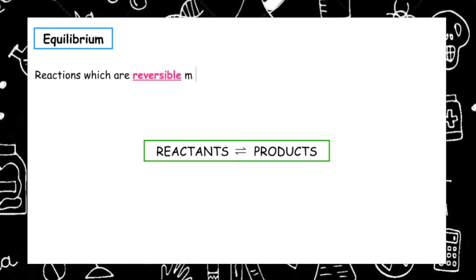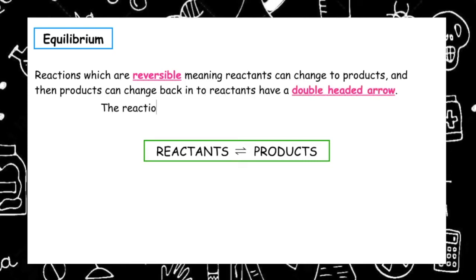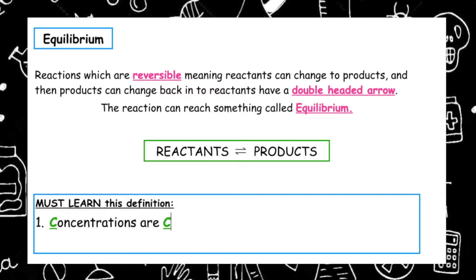Reactions which are reversible, meaning reactants can change into products and then products can change back into reactants, have a double-headed arrow. The reaction can reach something called equilibrium. The definition of equilibrium is that the concentrations are constant and that the rates are equal.